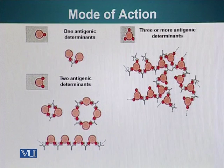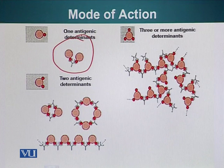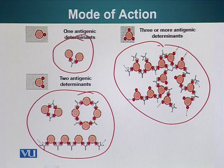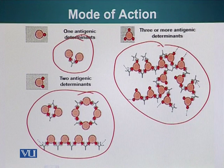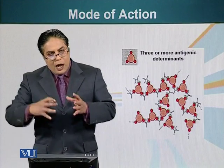Antibodies can link proteins or antigens and form larger structures. If there are two or more antigenic determinants on a single polypeptide, it can result in the formation of larger structures, which are easier for phagocytic cells to recognize and engulf. This makes it easier for the immune system to get rid of polyvalent antigens. Next, we will talk about B cell maturation and other functions of the B cell.